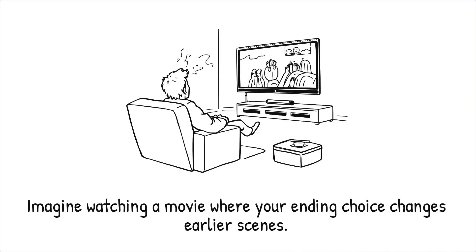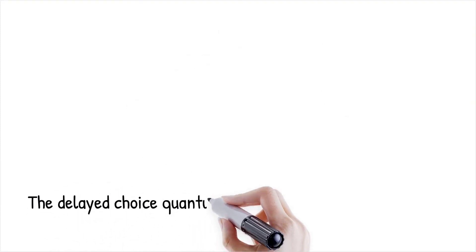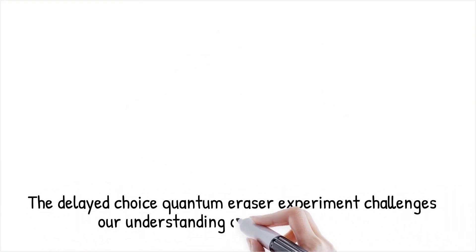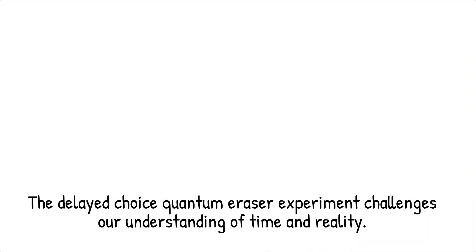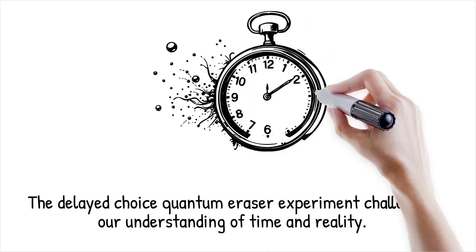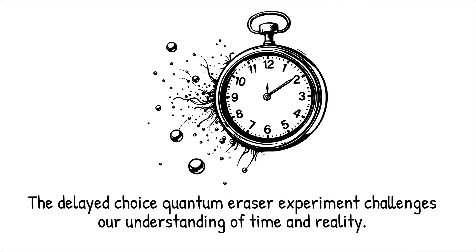Imagine watching a movie where you decide the ending halfway through and, inexplicably, your choice changes everything that happened earlier. This concept mirrors the experiment's implications, which suggests that decisions made after an event can influence its past outcome.